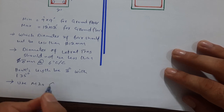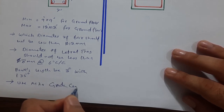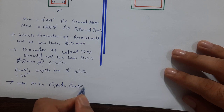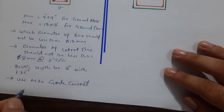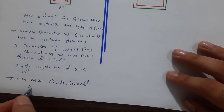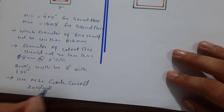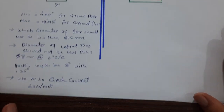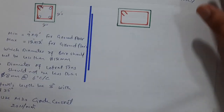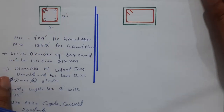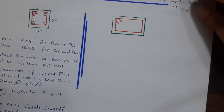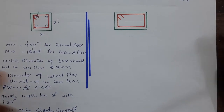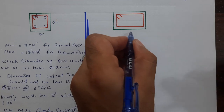Use M20 grade concrete, which has a characteristic strength of 20 Newton per mm square after 28 days. This is very important. So this covers minimum and maximum size for G plus one.